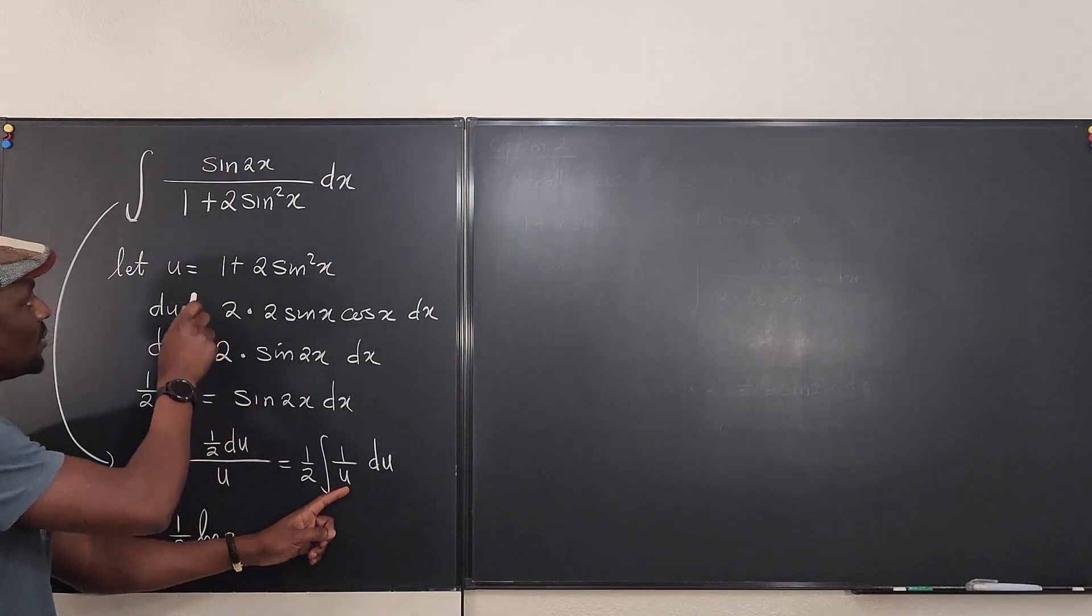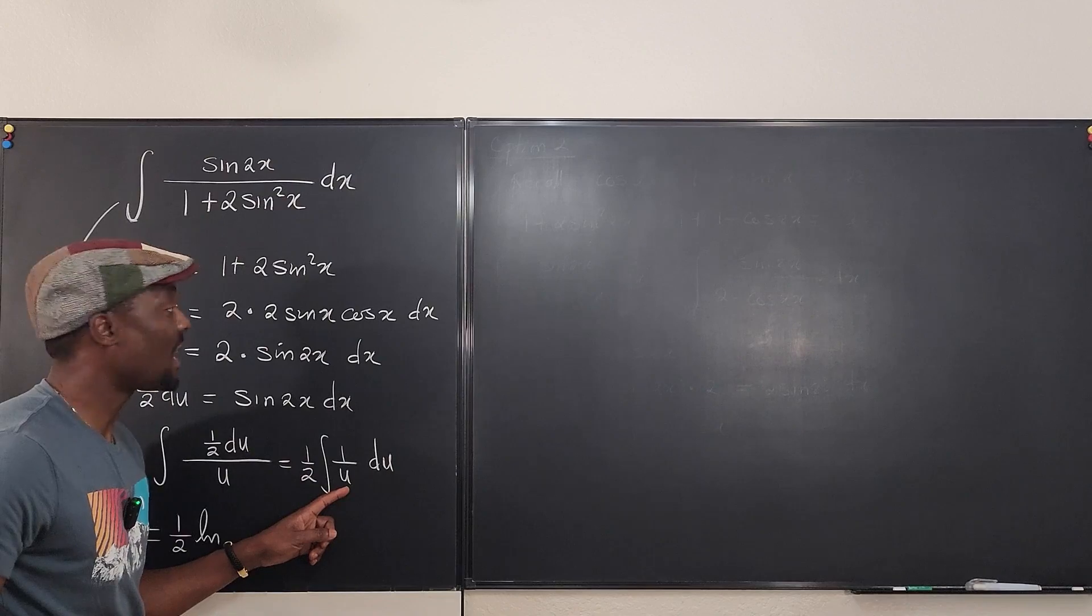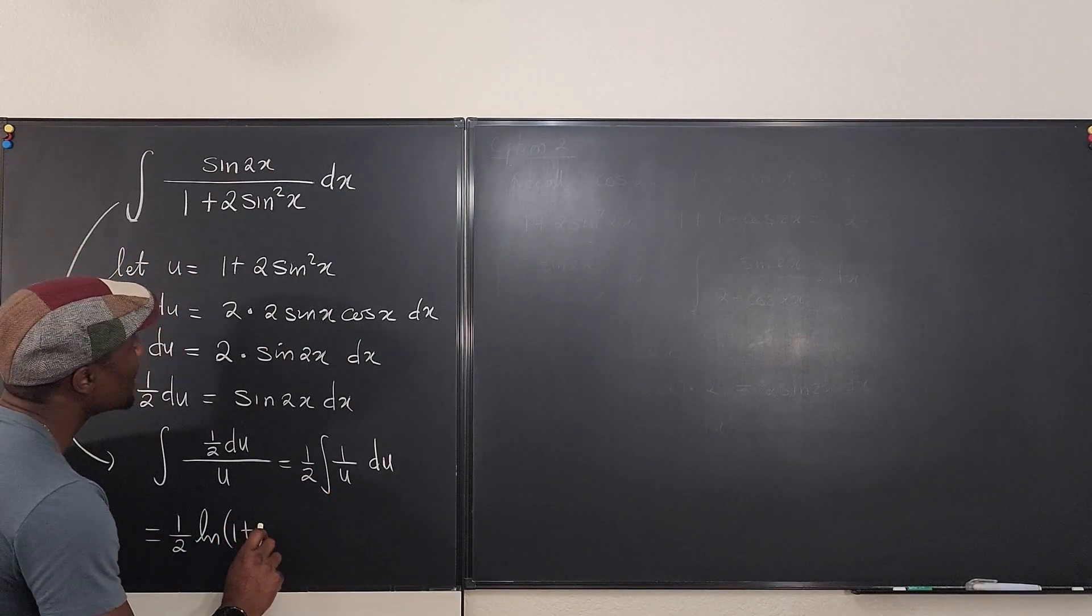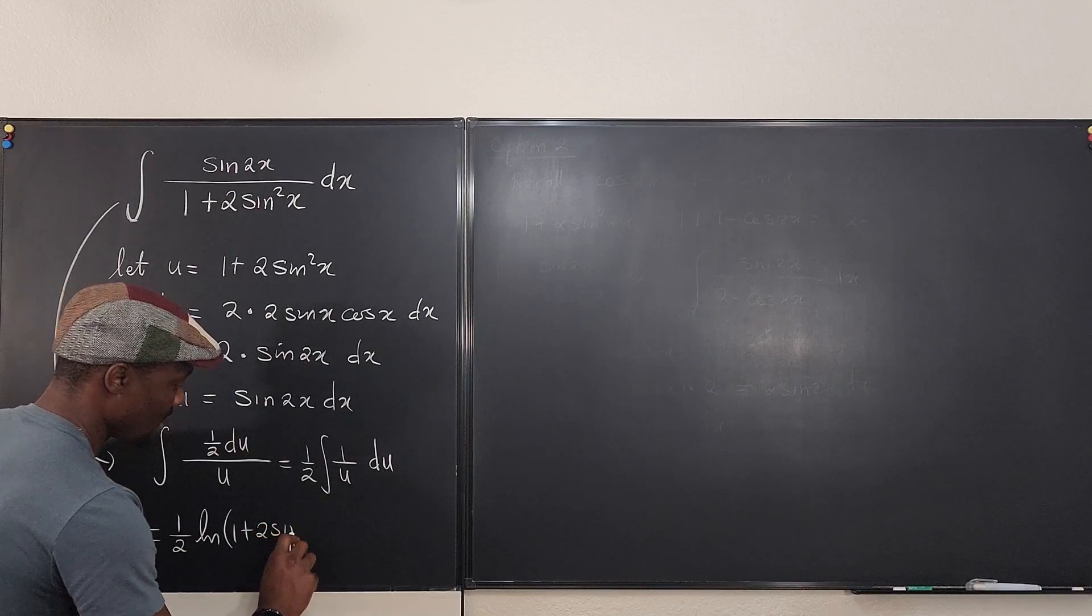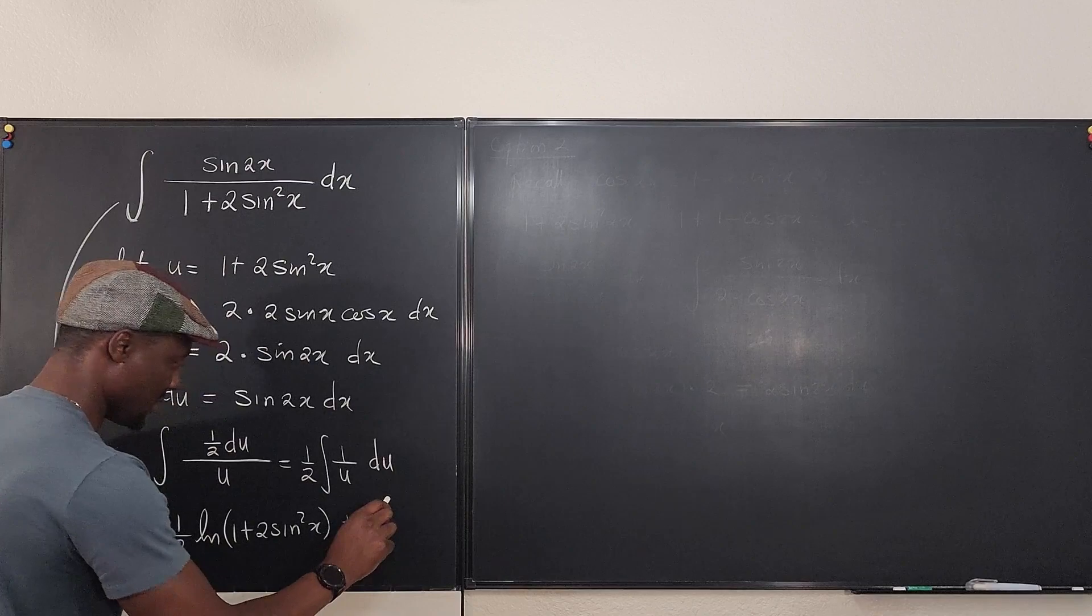But we said u was this, and this is always positive. So it means I don't need the absolute value. I'm just going to write 1 plus 2 sine squared x plus c. This is my answer.